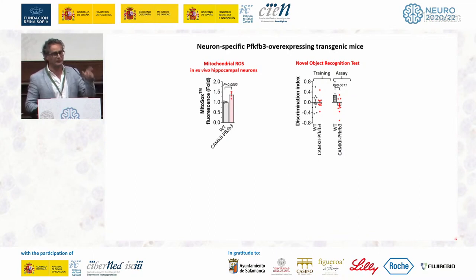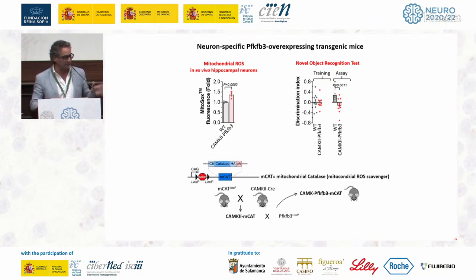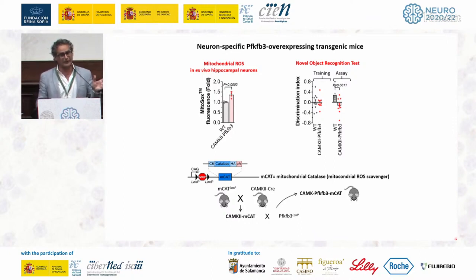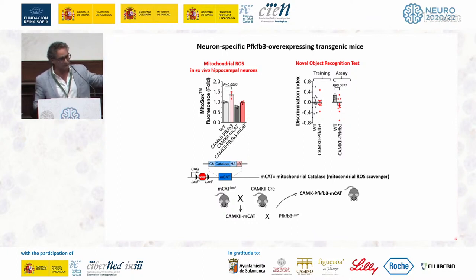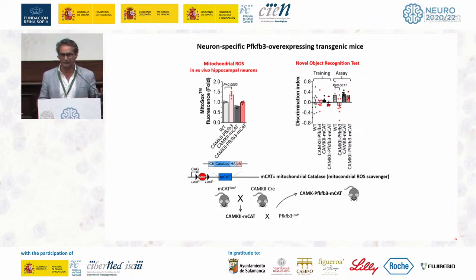Because ROS increase was likely mediating these effects, we wanted to genetically knock down ROS. We used a mitocatalase mouse model, in which catalase expression is Cre-dependent, allowing us to confine mitocatalase expression only to neurons expressing PFKFB3. This approach works very nicely — not only in our hands but in many labs worldwide. We were able to rescue ROS in neurons assessed ex vivo, and we were able to rescue the cognition phenotype. It appears damaging for neurons to have more glycolysis than they normally use.